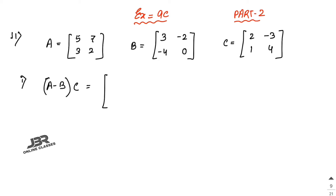First, find matrix A minus B. Subtract corresponding elements: 5 minus 3 is 2, 7 minus (−2) is 9 — be very careful about the negative sign — 3 minus 4 is... actually it becomes 7, and 2 minus 0 is 2. So A minus B is [2, 9; 7, 2].